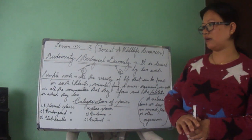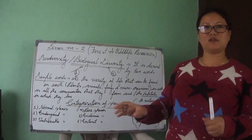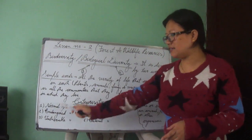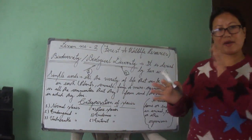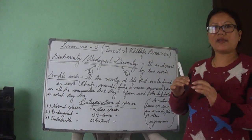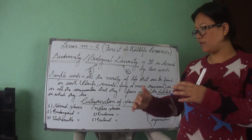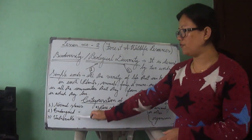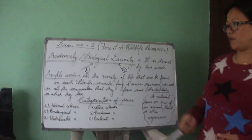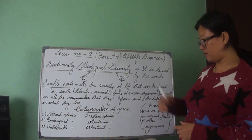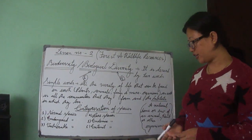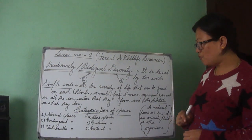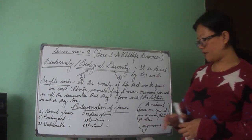Next we have Vulnerable Species. They are also very less in number, but if we compare endangered and vulnerable, vulnerable species are comparatively a little more in number than endangered. However, the way their numbers are reducing, very soon they will join the list of endangered species. An example of a vulnerable species is the Asiatic elephant.